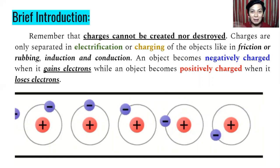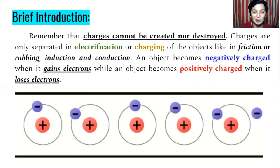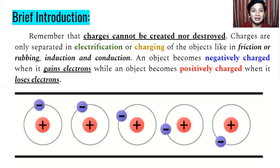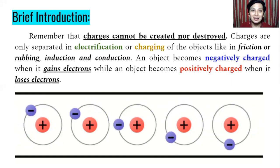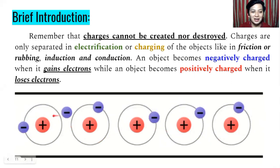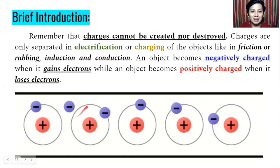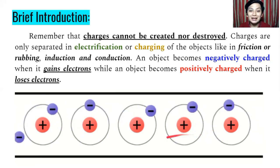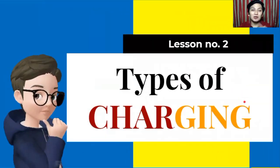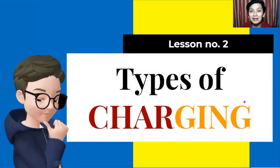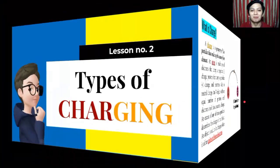Remember, the object will become negatively charged if it gains electrons. The object will become positively charged when it loses electrons. So like this one. So the other one will become positively charged and the other one will become negatively charged. So that is why charges cannot be created nor be destroyed.